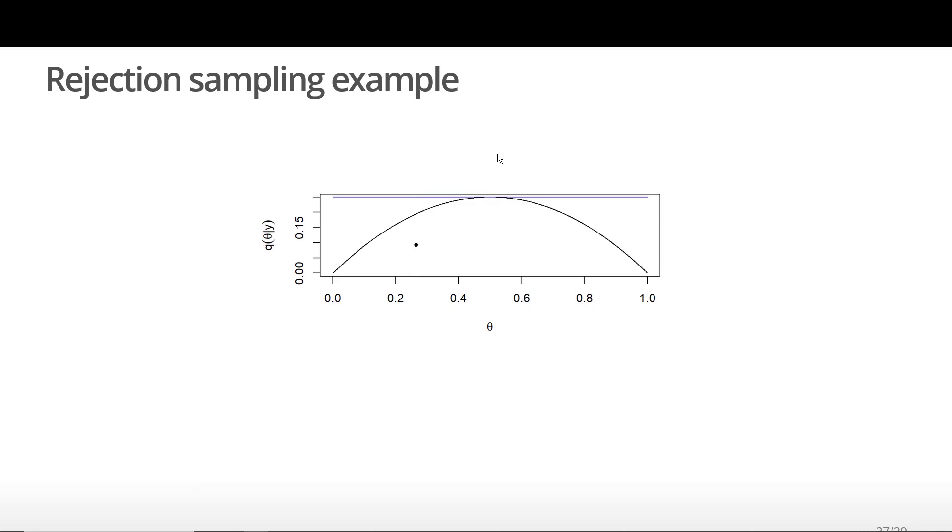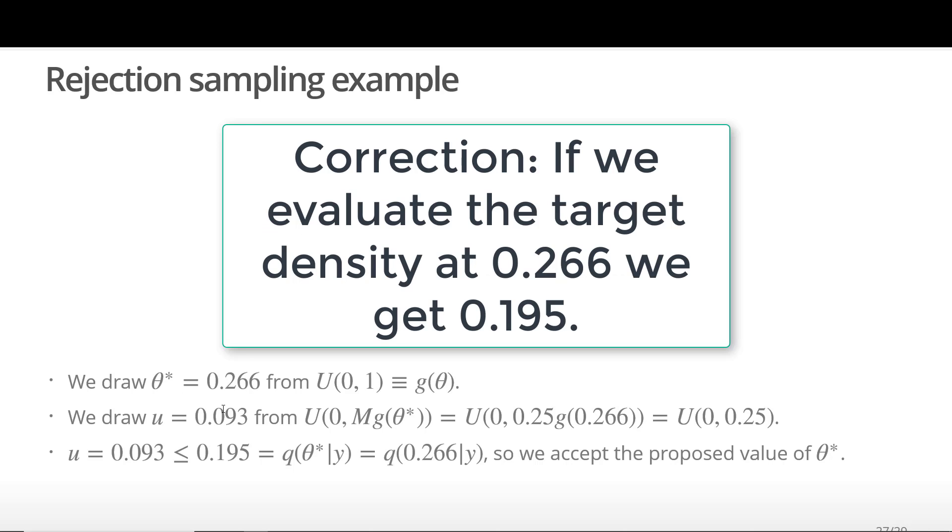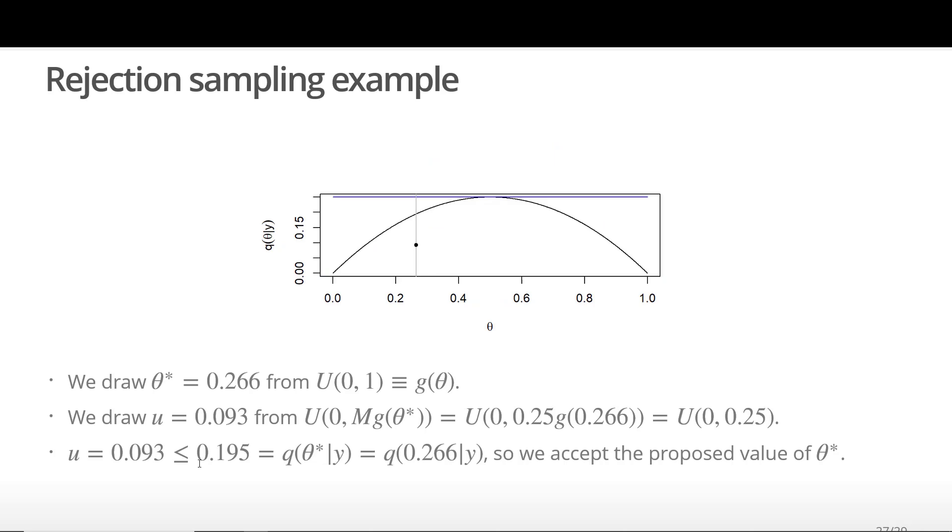Let's do some more examples with pictures. In this graphic, we have the target density and bounding function like before. We draw theta star equal to 0.266 from our proposal distribution. If we evaluate the bounding function at theta star equal to 0.266, we get 0.25. So we draw U from a uniform(0, 0.25) distribution and get U equal to 0.093. If we evaluate the target density at 0.93, we get 0.195. Since U is less than 0.195, we accept the proposed value of theta.